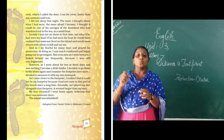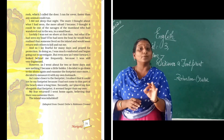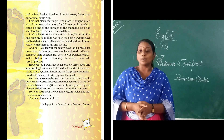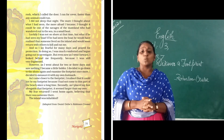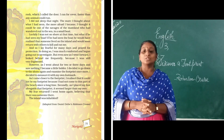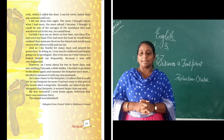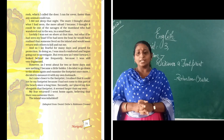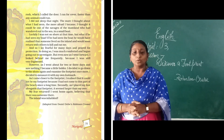In the third page it is written: 'Inside the rock, which I called the door, I ran for cover — faster than any animal could run. I did not sleep that night. The more I thought about what I had seen, the more frightened I became. I thought it would be one of the savages of the mainland who had wandered out to sea in a small boat. Luckily I was not on the shore at that time. But what if he had seen my boat? If he had seen the boat, he would have realized that someone lived on the island and could soon return with others to kill and eat me.'